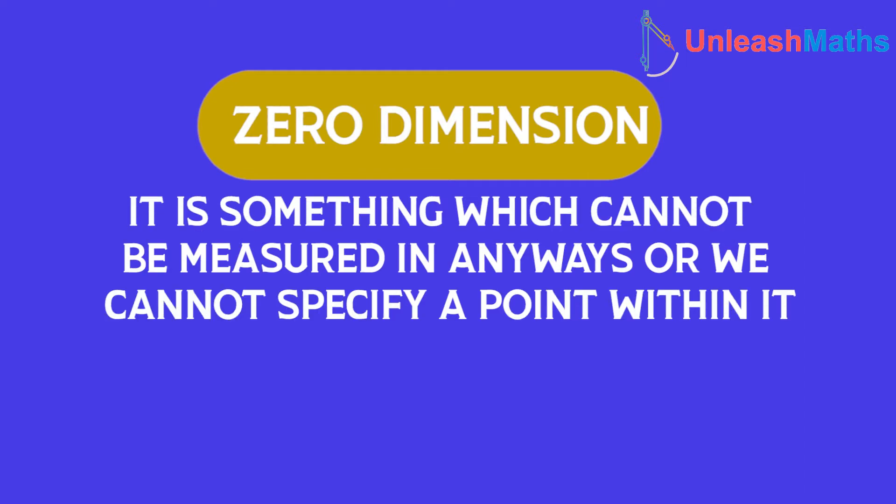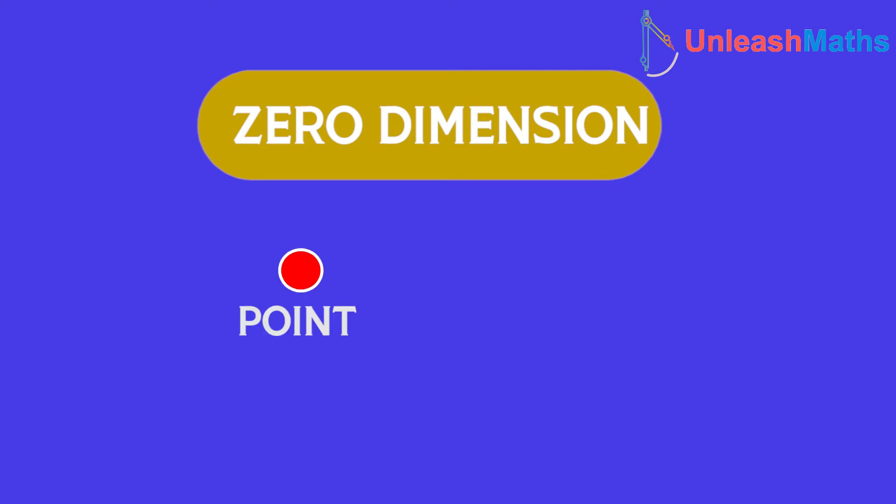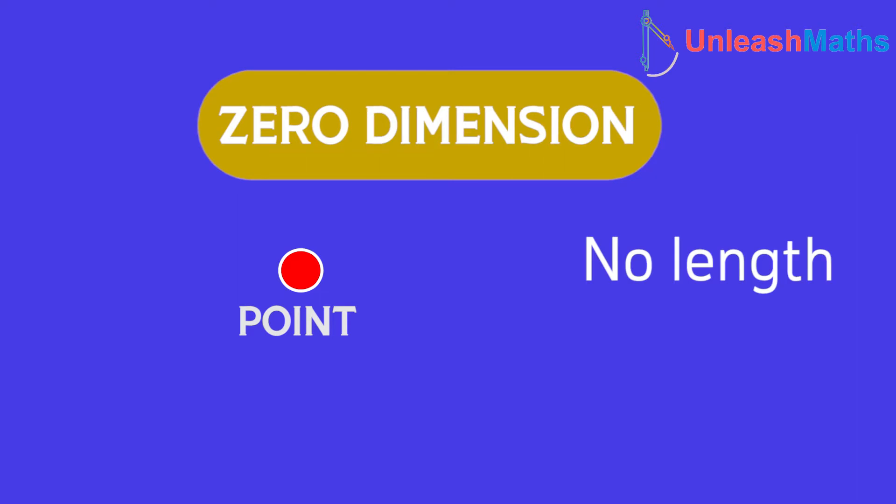Starting from 0D or zero dimension, it is something which cannot be measured in any way or we cannot specify a point within it. For example, a point or a dot is at zero dimension since it has no length, no breadth, no height to specify its space. Therefore, the point is at zero dimension.